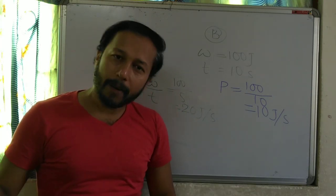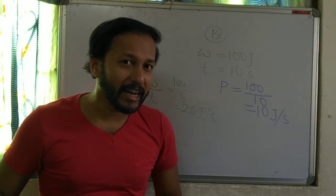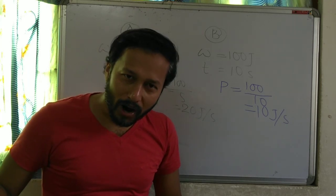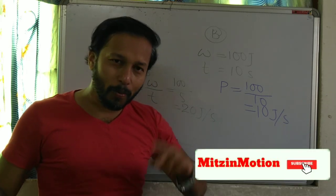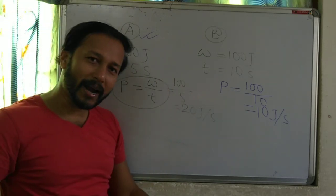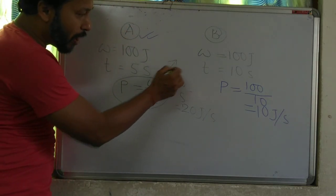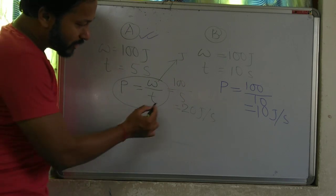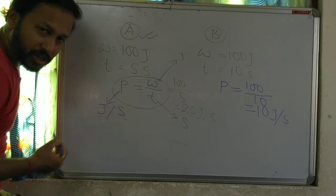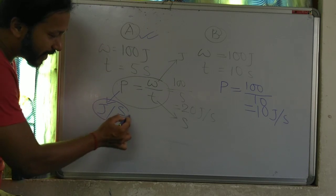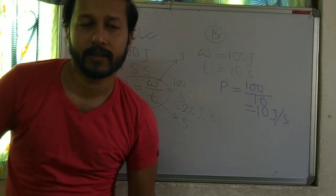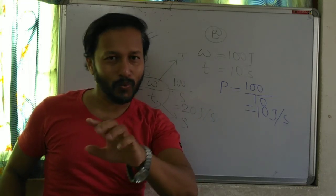In the definition of power, we write: power is the amount of work done per unit time. So power equals work done divided by time. The unit of work is Joule and the unit of time is second, so the unit of power is Joule per second. Instead of using Joule per second, we can write Watt — that is another unit of power.